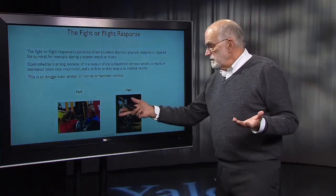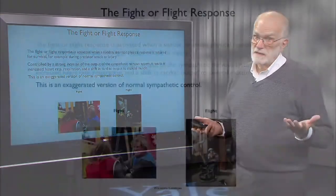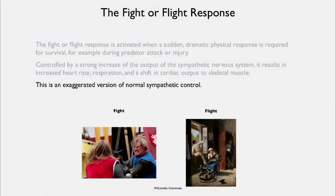Even if you've just had a big meal with blood concentrated around your intestine and liver, if you're attacked by a predator, that will shut down very quickly and there'll be a big output into skeletal muscle. Here is a picture of a fight, and here is a lover escaping through a window as an angry husband comes in — in both situations there's been a big reallocation into skeletal muscle so that one can either aggress or run quickly.